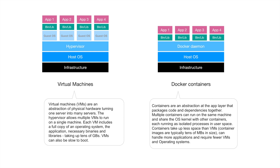From the official Docker documentation: virtual machines are an abstraction of physical hardware — they take one large server, make use of its resources, and convert it into multiple smaller servers each having their own operating system, which is the culprit behind slow boot times. Docker containers, on the other hand, are an abstraction at the app layer — they package dependencies and code together. Multiple containers can run on a single machine, sharing the same host OS kernel, with no separate OS per container, making them less space-consuming and faster to boot than VMs.